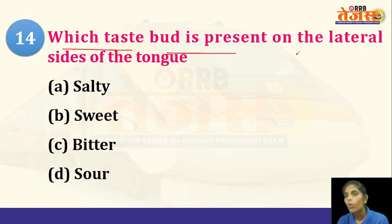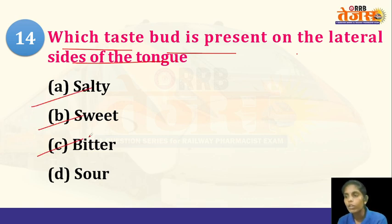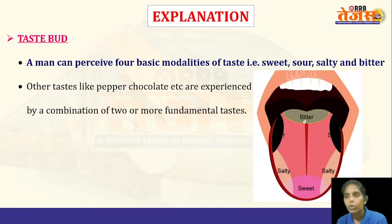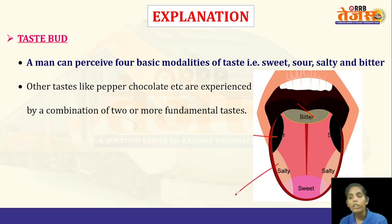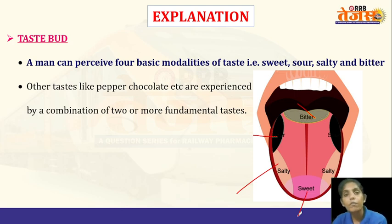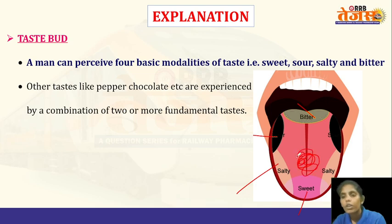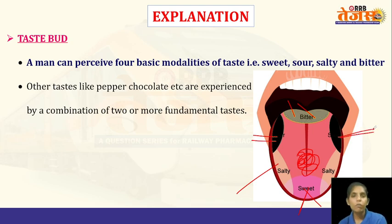Next question: which taste buds are present on the lateral sides of the tongue? The answer is sour taste. The back of the tongue perceives bitter taste, the lateral back side perceives sour taste, the anterior lateral sides perceive salty taste, and the tip of the tongue perceives sweet taste. There are different types of taste buds: filiform, fungiform, circumvallate, and foliate. Filiform are present at the tip, circumvallate at the back, and foliate on the back lateral sides of the tongue.